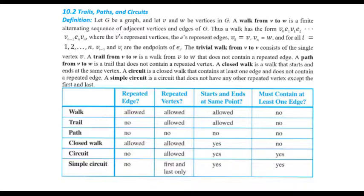A circuit is a closed walk that does not contain a repeated edge — that's why you can think of a circuit as a closed trail. A simple circuit is a circuit that does not have any repeated vertices except the first and last. You can think of a simple circuit as a closed path, because a path is a trail with no repeated vertices and no repeated edges. So a simple circuit is like a closed path in which the start and end points are equal, with no other repeated vertices.